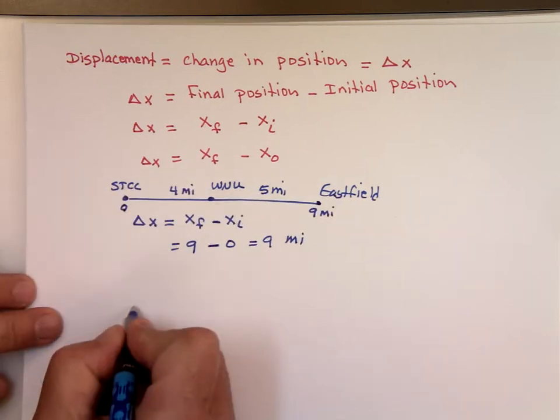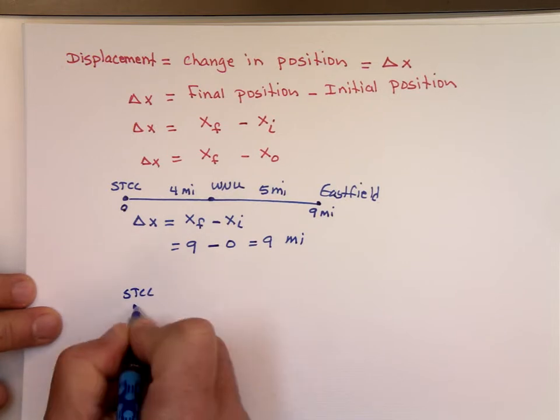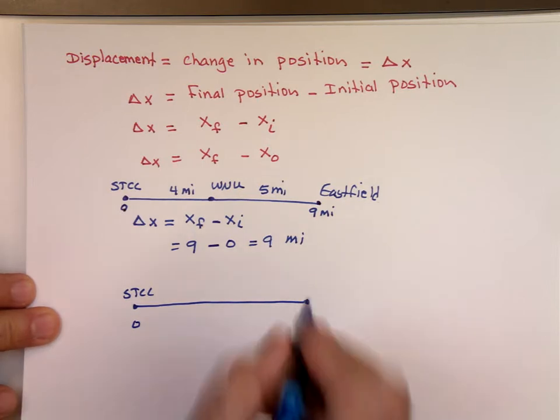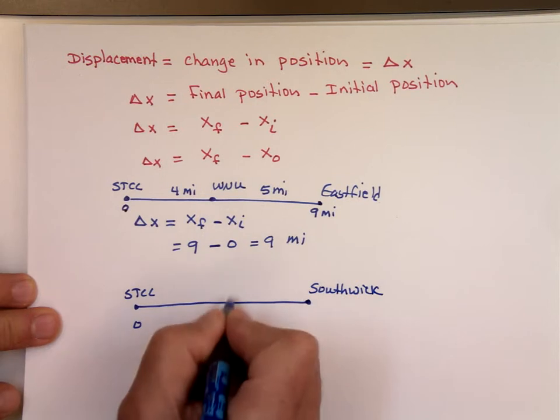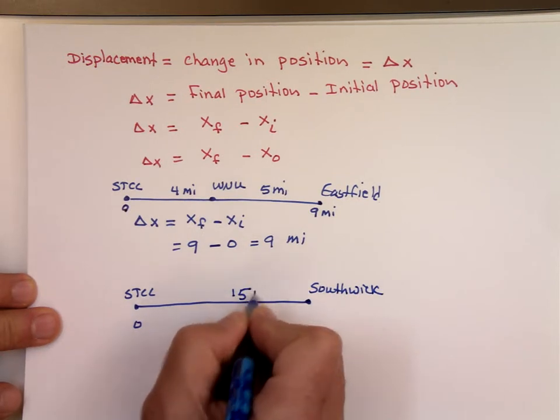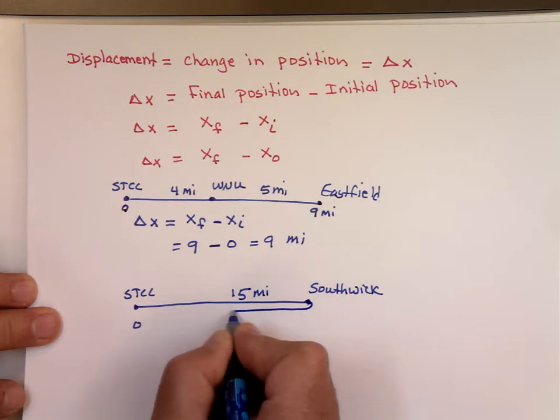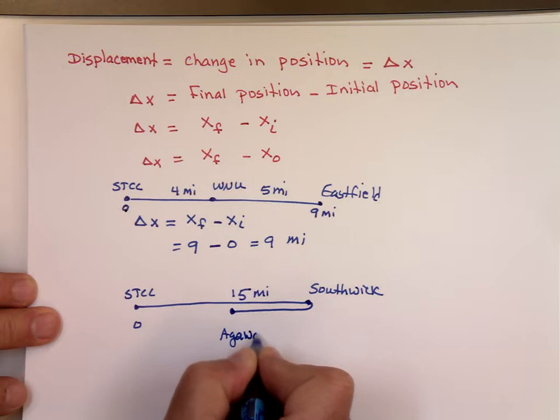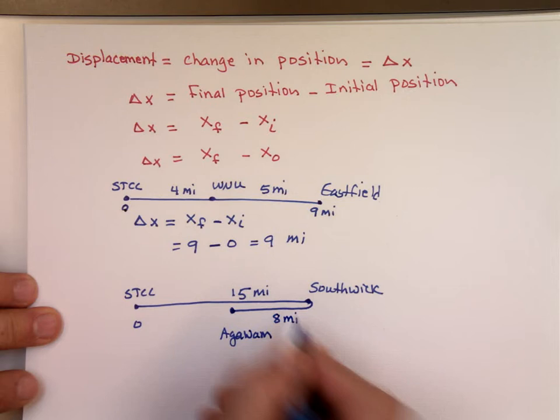In the other example, you started from STCC, and this is the zero marker. You went all the way to Southwick, right here, 15 miles. Then you came back to Agawam, which we said was eight miles.